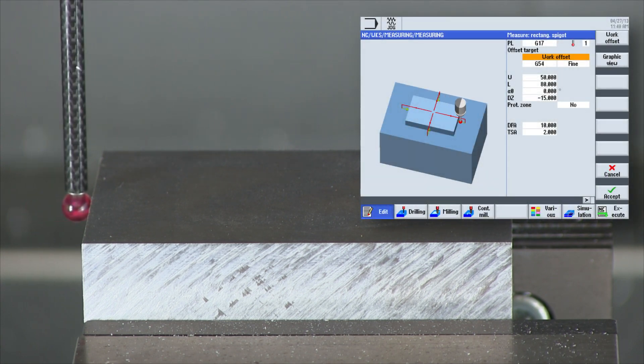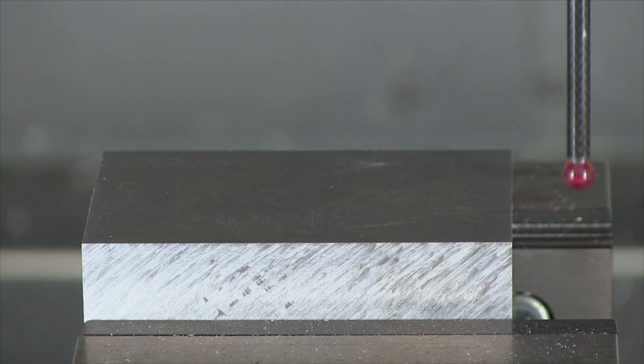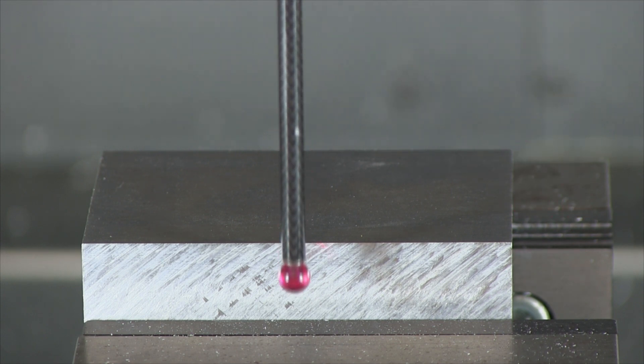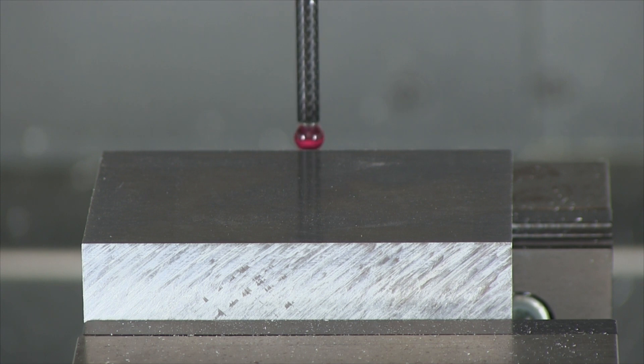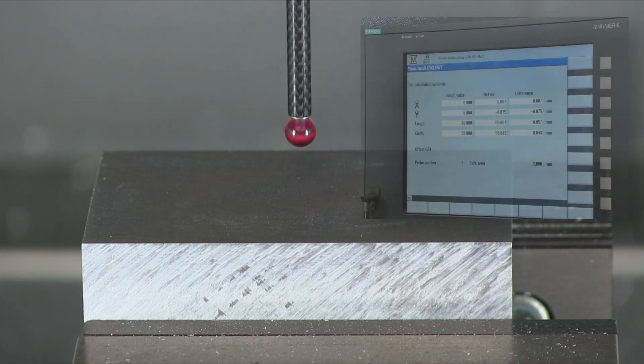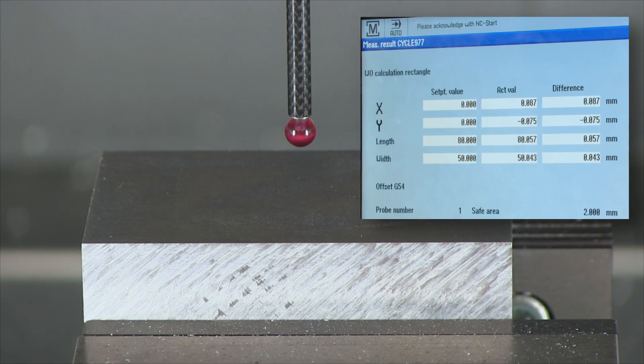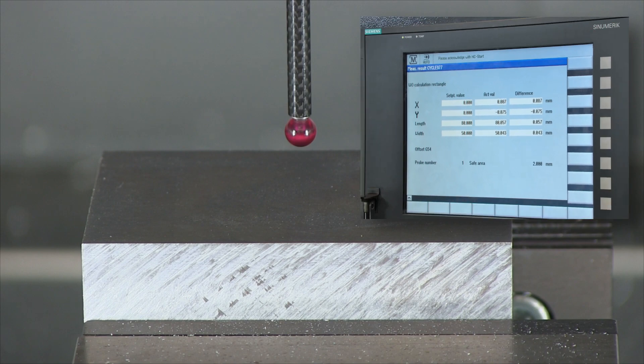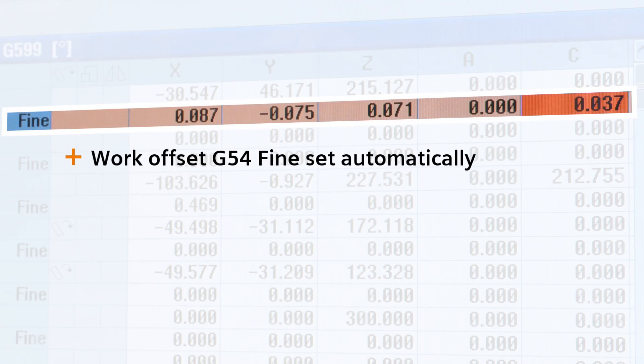Then, perform a measure spigot to determine the workpiece center. The values measured are automatically entered in the zero offset, in the example G54.